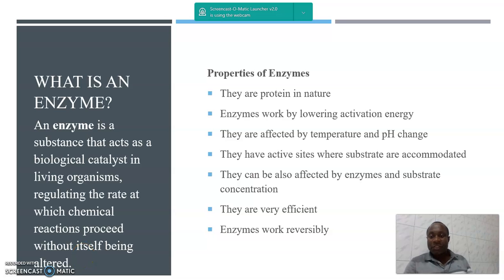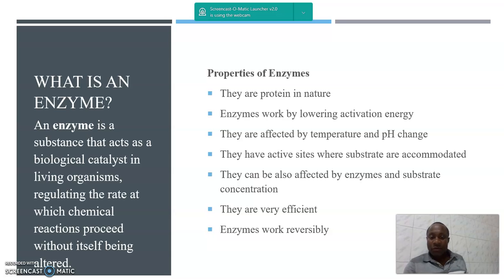Enzymes have active sites where substrates are accommodated — the place in which the substrate is inserted and a new product is formed after the reaction takes place. They can also be affected by enzyme and substrate concentration. If you add more enzymes in the reaction, the reaction will increase its rate. The same applies to substrates. But when the enzyme's active sites are saturated, no more substrates can be accommodated and the rate of reaction will decrease.